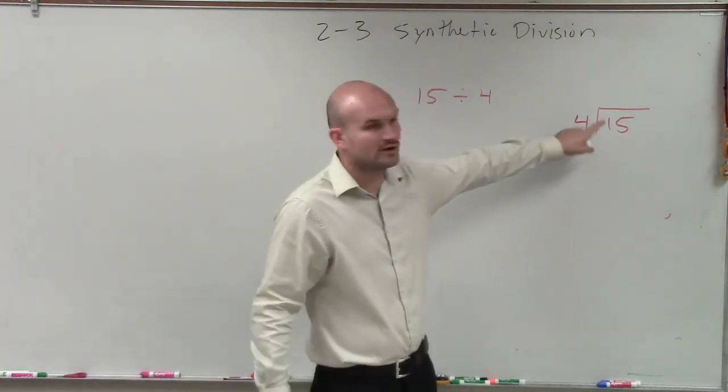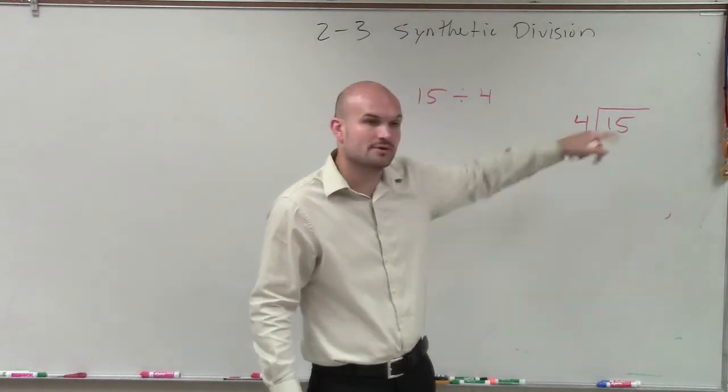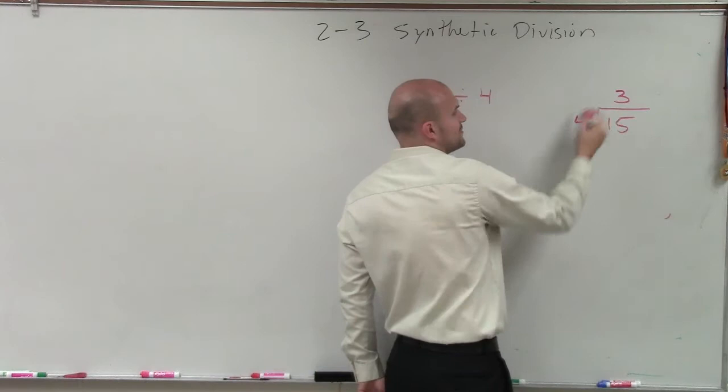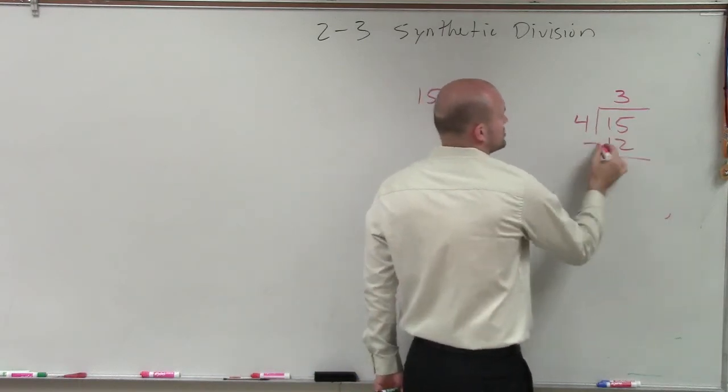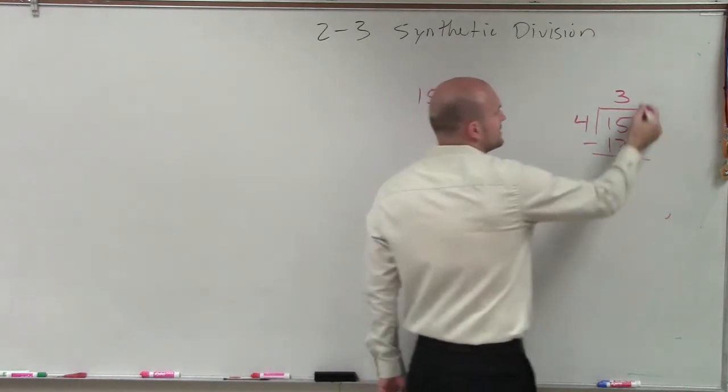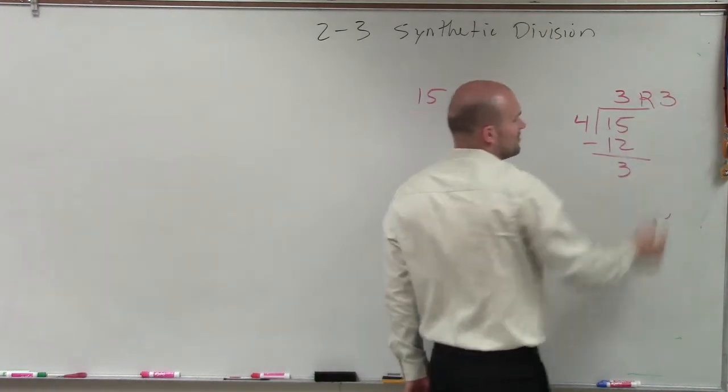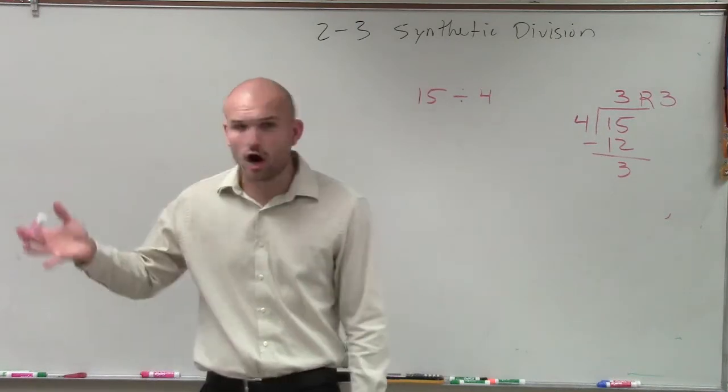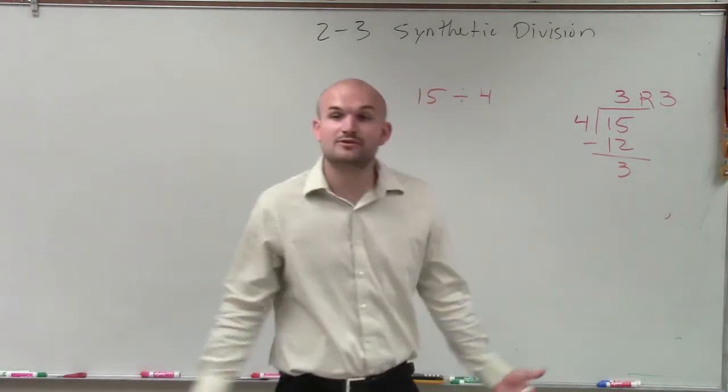Then what you do is say 4 can't go into the ones place, but goes into 15. It goes in there three times, then you multiply, 3 times 4 equals 12. Subtract the rows, you get 3. 4 does not go into 3, so we like to say remainder 3. Back in third or fourth grade, remember you write R3, so you talked about the remainder.